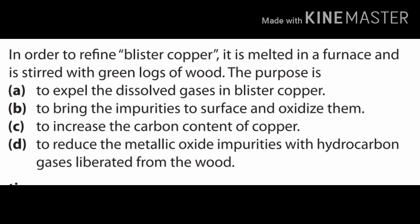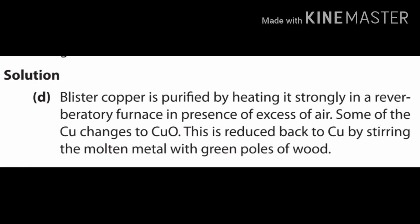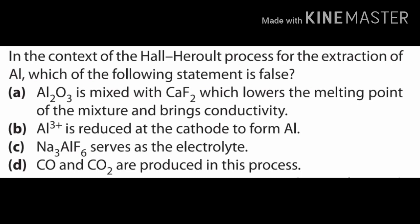Answer is D. Hydrocarbon produced by green wood reduces cupric oxide. Blister copper is purified by heating strongly in a reverberatory furnace in presence of excess air; some copper changes to cupric oxide, which is then reduced back to metallic copper by stirring. This process is called poling.